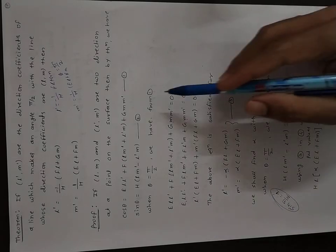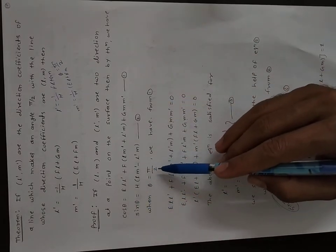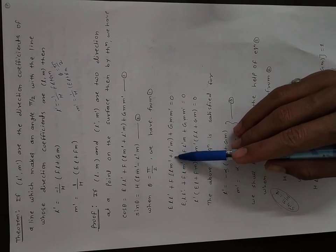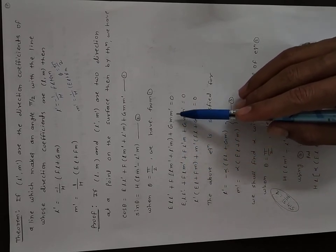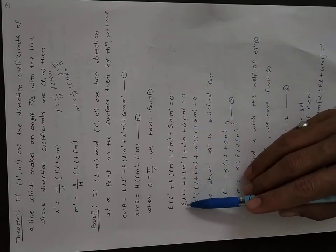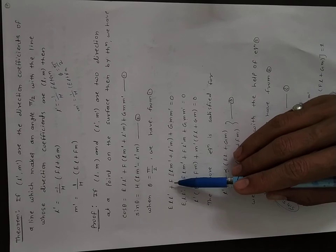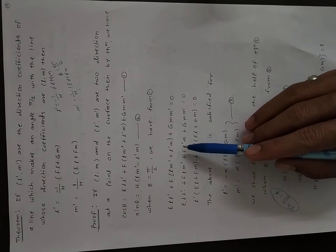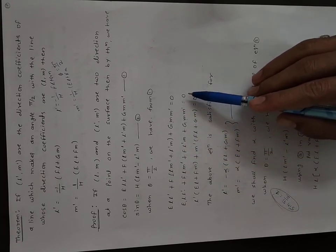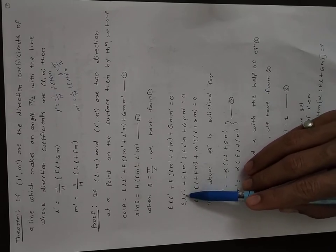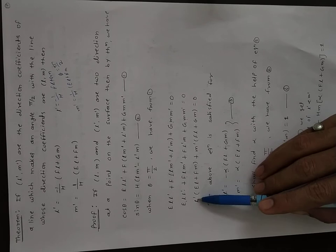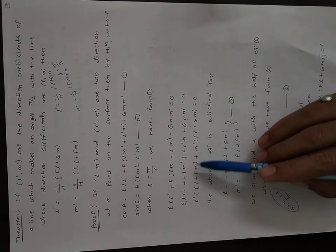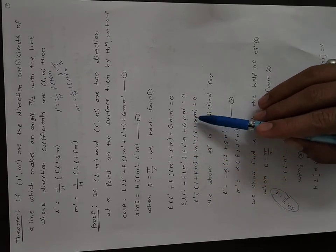Setting θ = π/2, cos(π/2) = 0, so from equation 1: E·L·L' + F(LM' + L'M) + G·M·M' = 0. Taking L' common: L'(EL + FM) + M'(FL + GM) = 0.